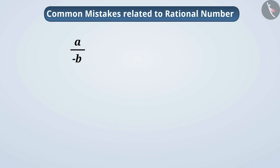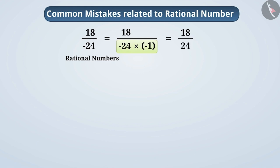Children understand correctly that if the standard form of the rational number is to be obtained, then its denominator should be first converted to a positive integer. But they use the wrong method to convert the denominator positive. For example, to make the denominator positive for a rational number 18 by minus 24, they just multiply the denominator by minus 1. Remember that if we do this, it changes the value of the rational number. So this method is wrong.